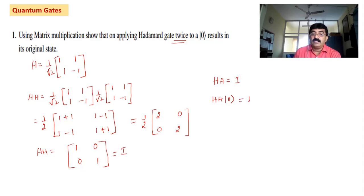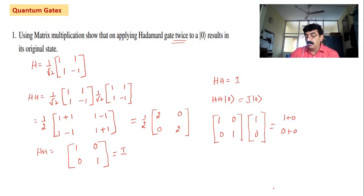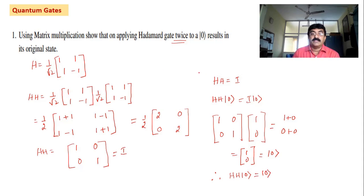Now we operate H×H on |0⟩, which means I on |0⟩. I on |0⟩ means [1, 0; 0, 1] times the column vector [1; 0] — this is the matrix representation of |0⟩. Simplifying: 1×1 + 0×0 = 1, and 0×1 + 1×0 = 0. So the result is [1; 0], which is nothing but |0⟩. Therefore, when the Hadamard gate operates twice on |0⟩, we end up with |0⟩ only — the original state is preserved.